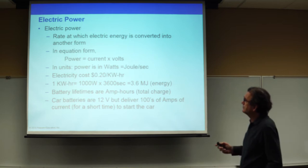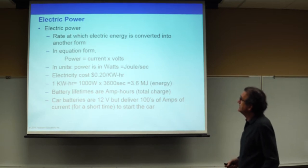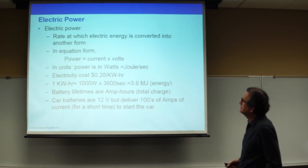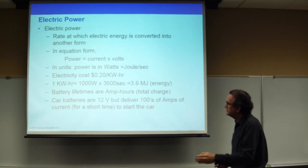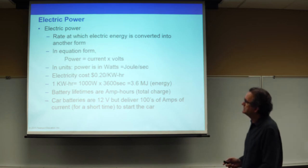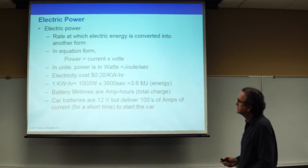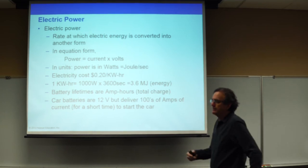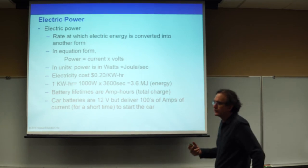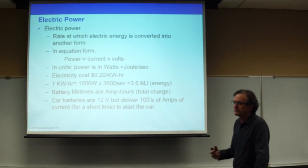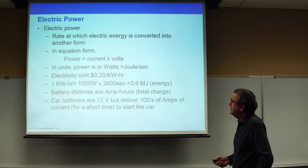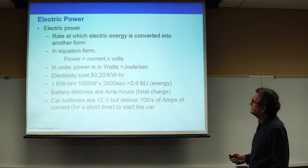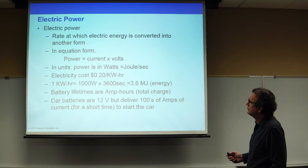We're going to start by telling you that electrical power is the rate at which energy is converted into another form. A simpler definition: in a closed circuit — one that involves a toaster, a lamp, or a hairdryer, for example — the electrical power is given as current times the voltage.